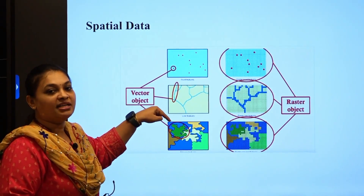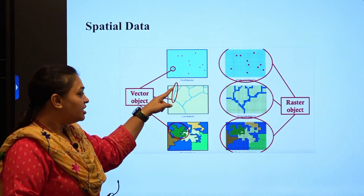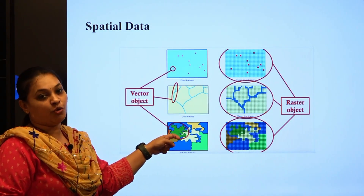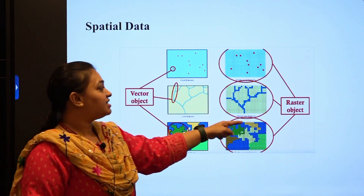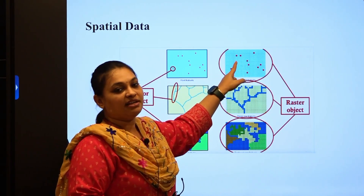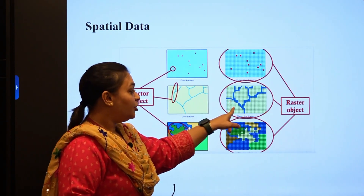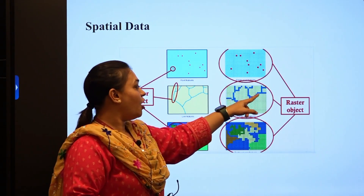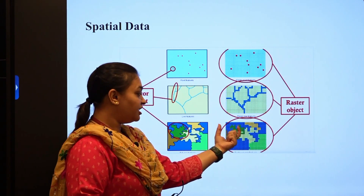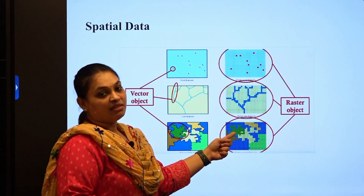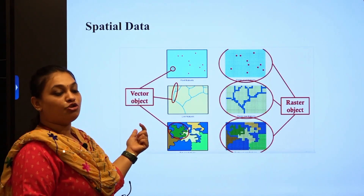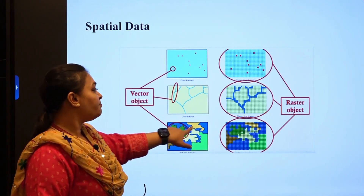A vector object represents geographical data using polygons, lines, or structures. When you select a place, it shows a line structure — polygons or lines — that is your vector object. A raster object, on the other hand, gives information in the form of pixels. You can see the difference: in vector, a country's structure is shown as lines or polygons; in raster, everything is shown in pixel form. Spatial data takes these two forms: vector object and raster object.